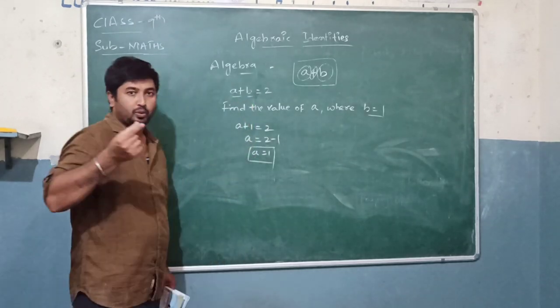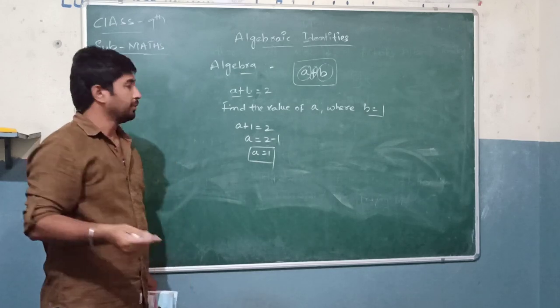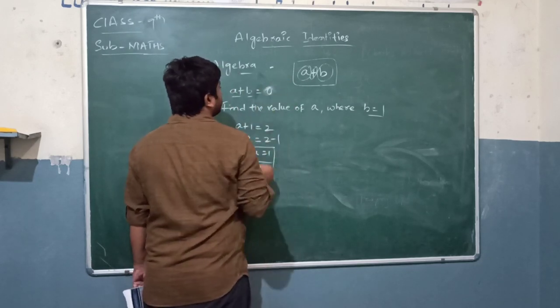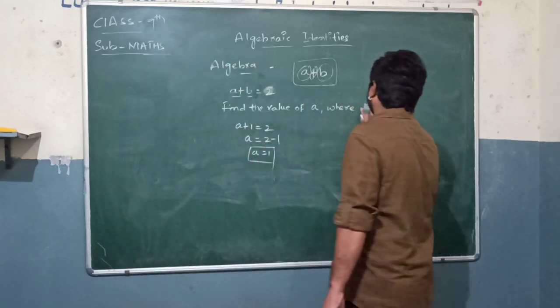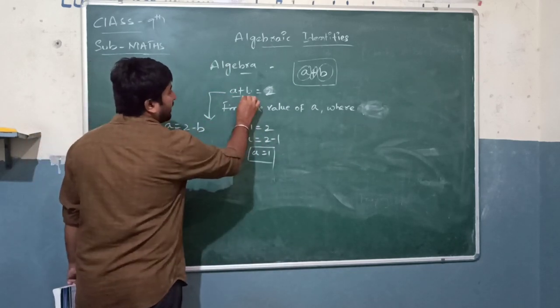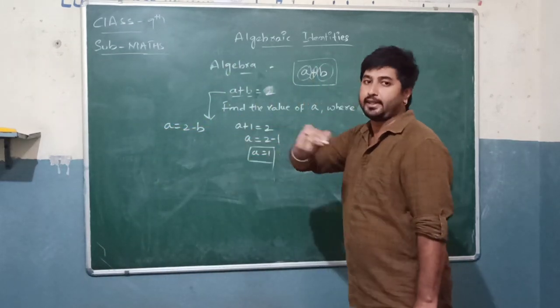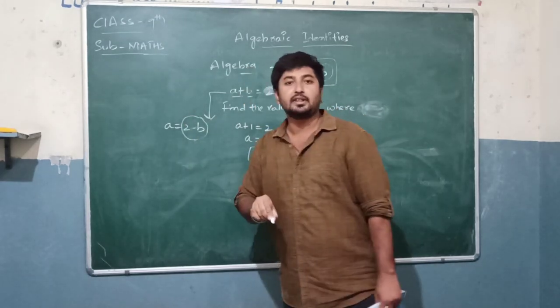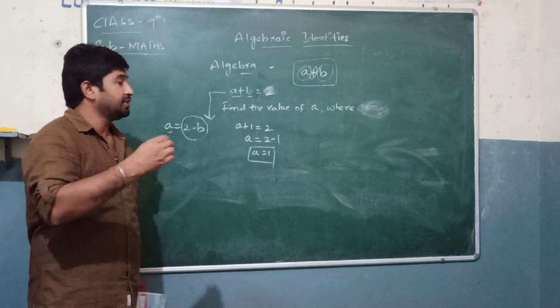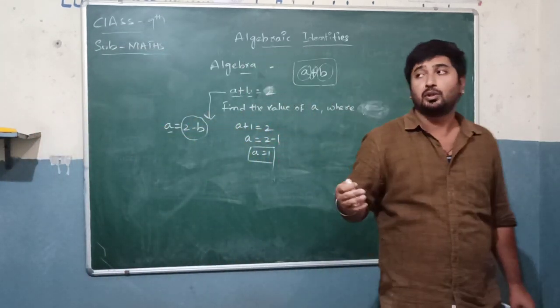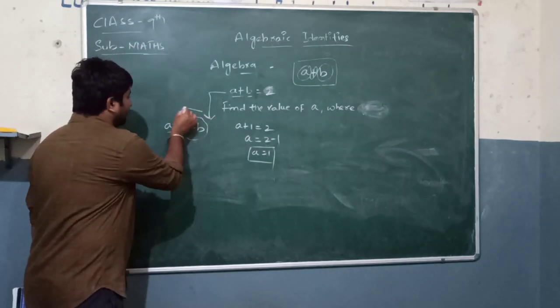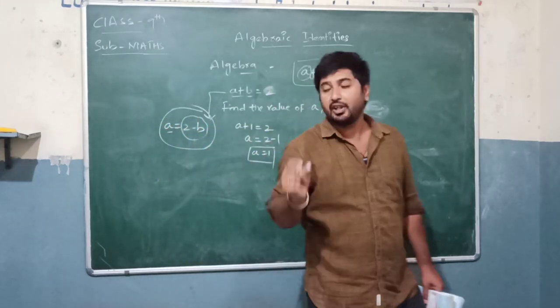So here a plus b equals 2. You can see the value of b is already 1. So a plus 1 equals 2. Then a equals 2 minus 1, so a equals 1. This is the value of a. In this case, you can choose values and variables. This is an algebraic equation. For example, a plus b equals 2, and you can solve for either variable.